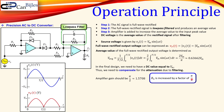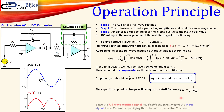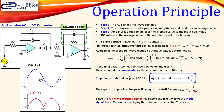The capacitor C provides low-pass filtering. Making it larger gives more filtering but makes the signal response slower — there is a trade-off. The cutoff frequency is given by the standard RC low-pass filter formula using R5 and C, since those two components determine the low-pass filter cutoff.